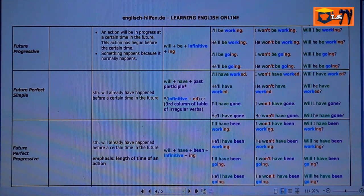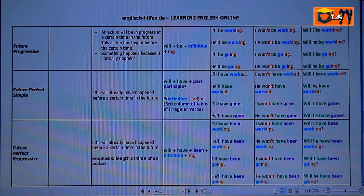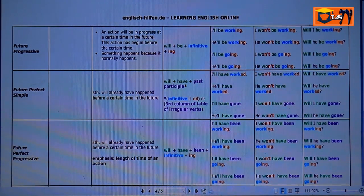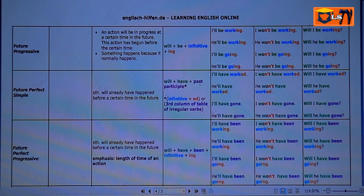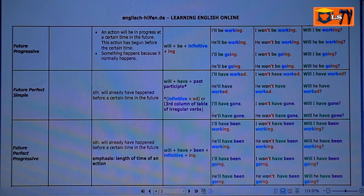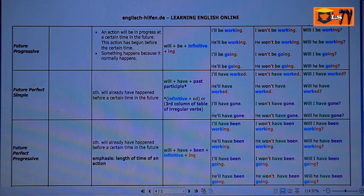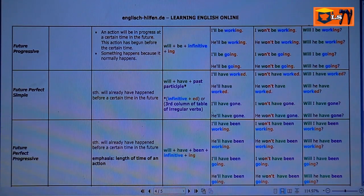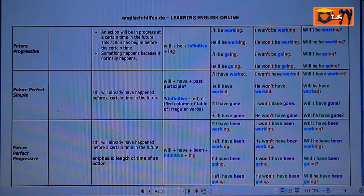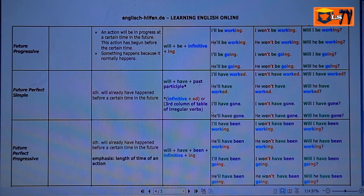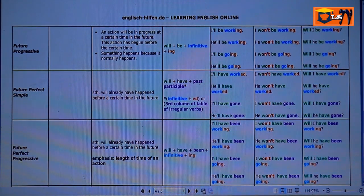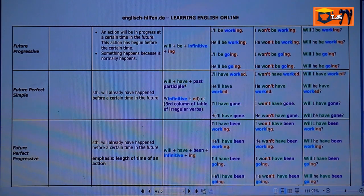Let us look at, for example, verb to work. I'll be working, he'll be working, I'll be going, he'll be going. Negative: I won't be working, he won't be working, he won't be going. Interrogative: Will I be working, will he be working, will I be going, will he be going. Now, I hope you understand Future Progressive.